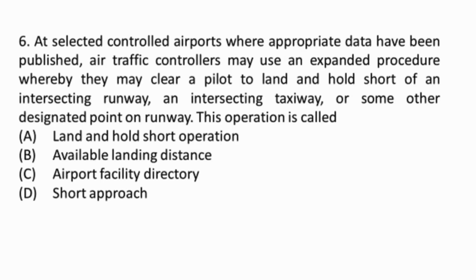Question 6: At selected controlled airports where appropriate data have been published, air traffic controllers may use an expanded procedure whereby they may clear a pilot to land and hold short of an intersecting runway, an intersecting taxiway, or some other designated point on the runway. This operation is called land and hold short operations. At small airports with limited space, pilots receive instructions to hold on the runway, clear of the link taxiway, until the departing aircraft enters the runway via the apron link, enhancing efficient use of limited space and ensuring safe aircraft movements.